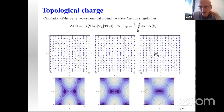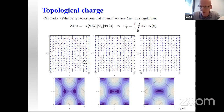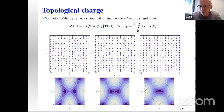The topological invariants only vanish when both Dirac points merge. At that point, all information about chirality is gone and we are left with a trivial Berry vector potential structure — the topology is completely lost.